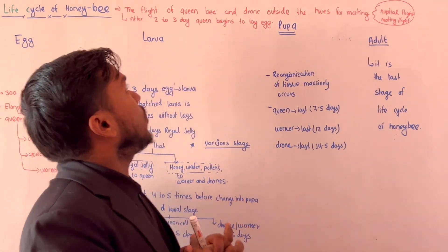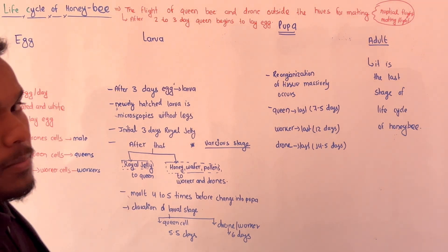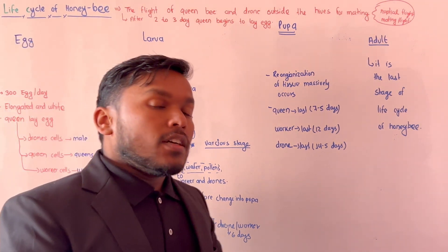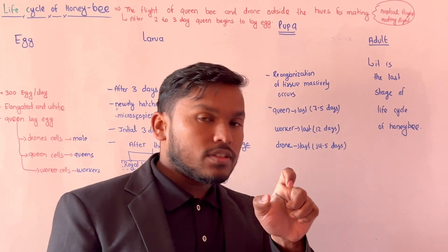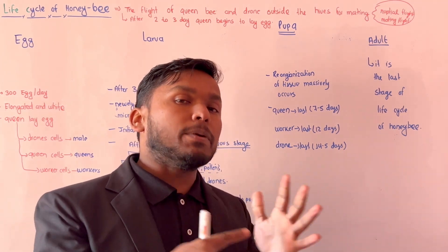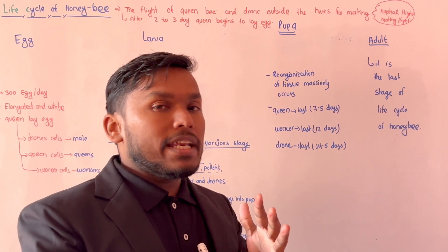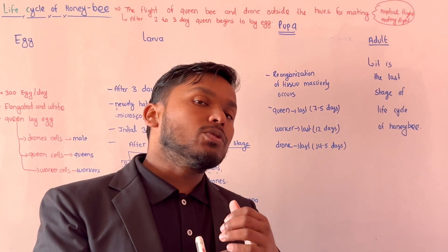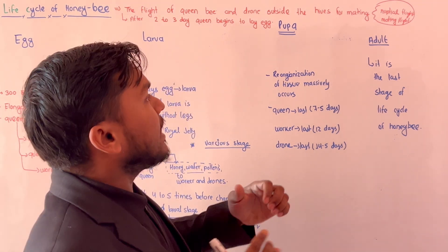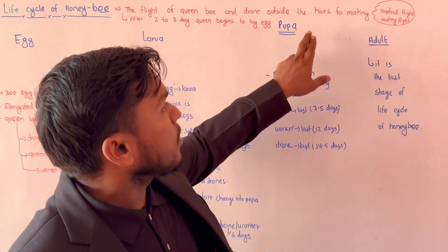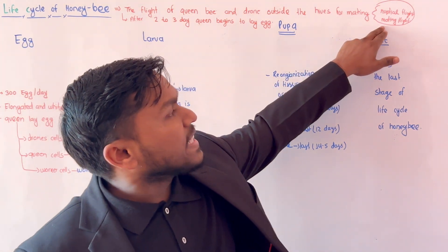This is the flight of the Queen — the Queen and drone. This is the bee in the air. This is the main purpose of mating. The purpose is mating, that's why we have a mating flight.